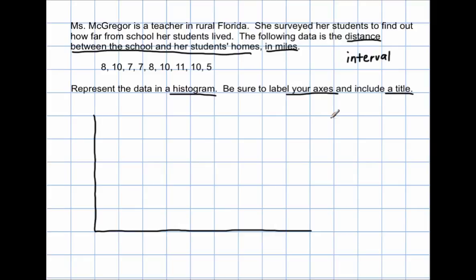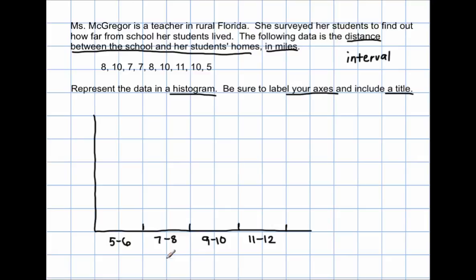I'm going to draw lines here to separate my intervals — from here to here, one interval; from here to here, another interval; from here to here, another; and from here to here, the last one. I'm going to label those intervals: 5 to 6, 7 to 8, 9 to 10, and 11 to 12. These represent the distance in miles.